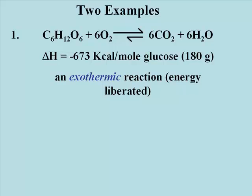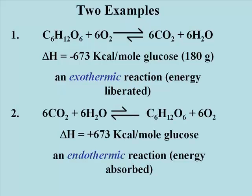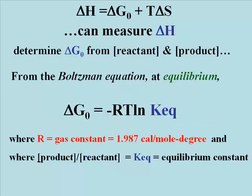A reaction that liberates heat is defined as exothermic, and the delta H of an exothermic reaction is negative. This chemical equation is the one for respiration. The second example describes photosynthesis, the exact opposite of respiration. It should be no surprise that the delta H for this reaction is plus 673 kilocalories per mole of glucose made. A reaction that absorbs heat will have a positive delta H and is by definition endothermic. We can measure delta H directly using the calorimeter.